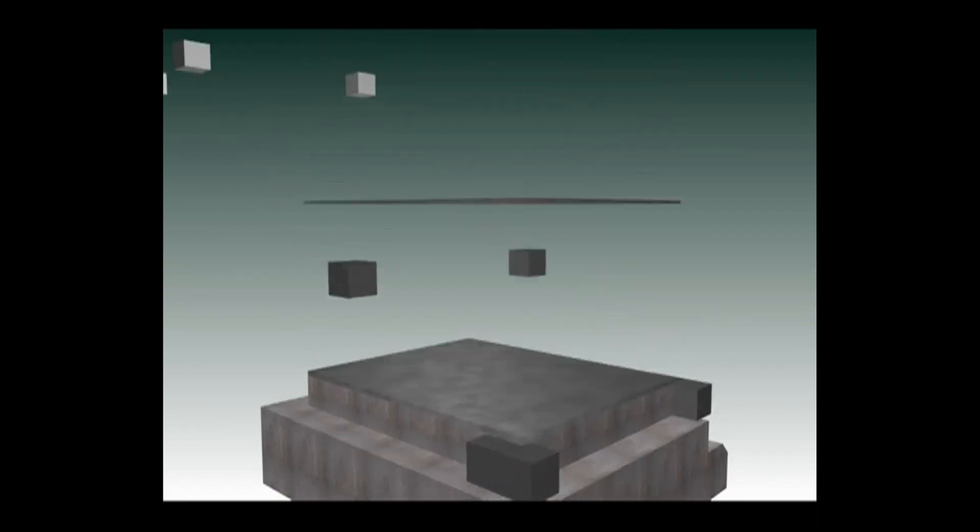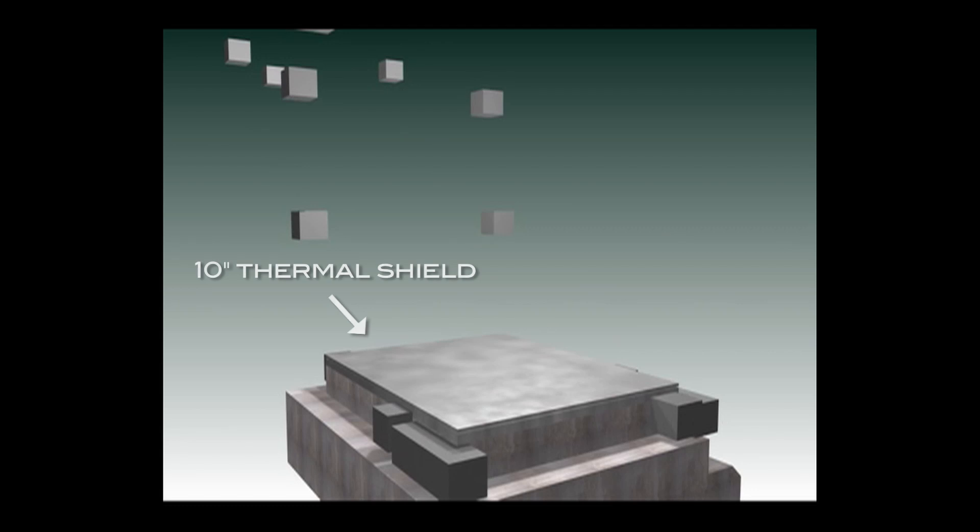The next material laid down is a 10-inch thermal shield of cast iron, which will also be added between the graphite stack and the top and side biological shields.